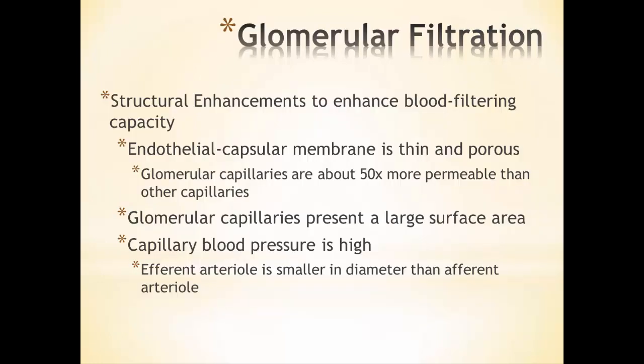Some structural enhancements help with filtration. One is that the endothelial capsular membrane is thin and porous — those fenestrations have big holes in the endothelium, and filtration slits allow things to move through. Glomerular capillaries are about 50 times more permeable than other capillaries because of those fenestrations. The glomerular capillaries also present a very large surface area — if spread out, it would be equal to our skin. Capillary blood pressure is high because the efferent arteriole, where blood leaves the glomerulus, is smaller than the afferent arteriole.